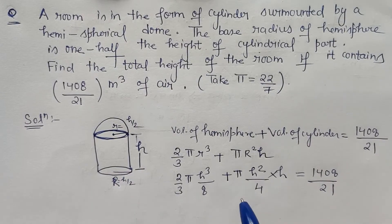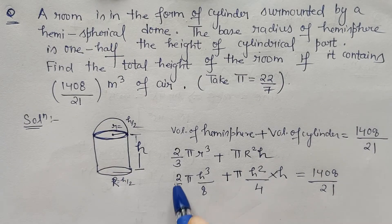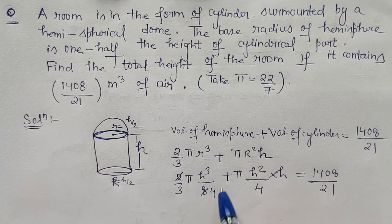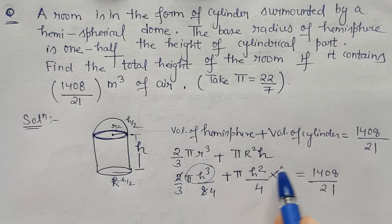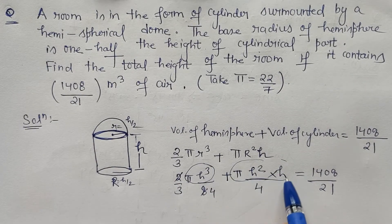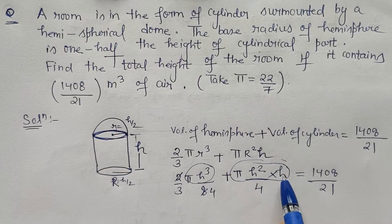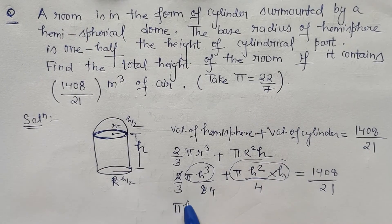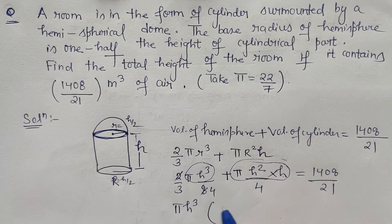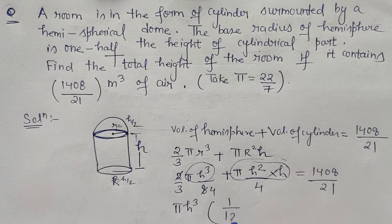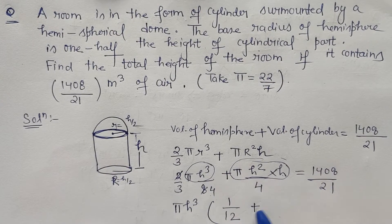Now things which we can take out common, this can be cancelled. So we can take out pi h cube from this place and pi h cube from this place, because h square into h is h cube. So if I take out pi h cube I am left with 1 upon 12.